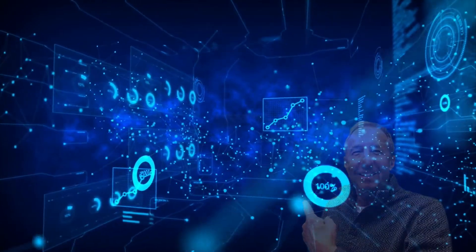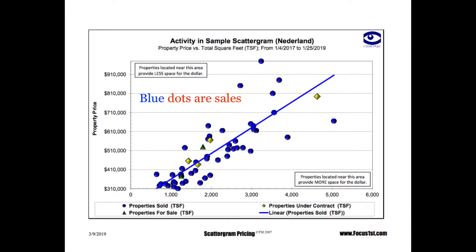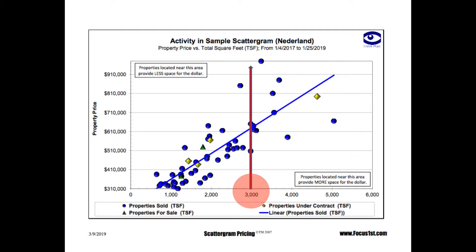So let's take a look at this slide behind me. It takes the comparative data that I load, and it draws what I call a fair market value line, which is the average distance between the dots. And for you engineers, the line is calculated using a linear regression equation. We then take the square feet of the subject home, and we draw a line straight up from the x-axis. It's a certainty that the home is going to sell on this line.